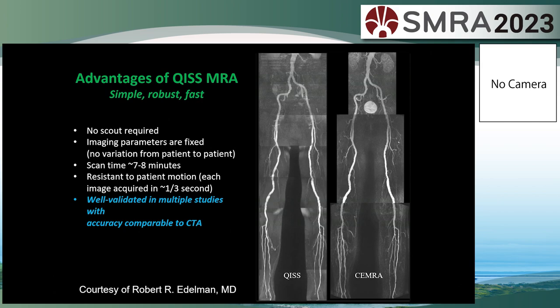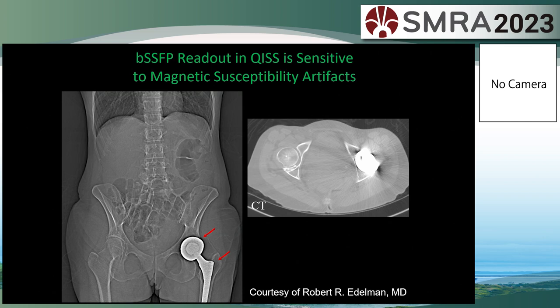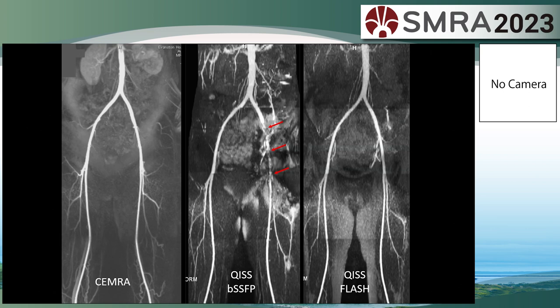Scan time is about 7 to 8 minutes. A clinical case of QIS and contrast-enhanced MRA with distal aorta and bilateral superficial femoral artery occlusion. Many collateral arteries are well depicted by QIS. QIS is also less affected by patient's leg motion. This slide shows a case with left hip arthroplasty. MARS/WARP sequences can be used in QIS, which shows less susceptibility artifacts.